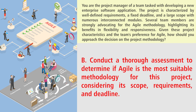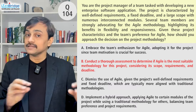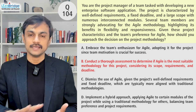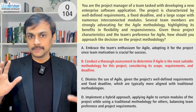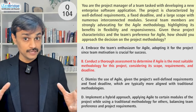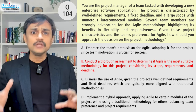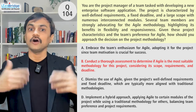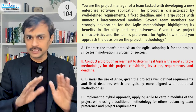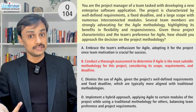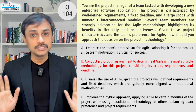Option B: Conduct a thorough assessment to determine if Agile is the most suitable methodology for this project, considering its scope, requirements, and deadline. This is an easy choice — I can definitely pick it because it focuses on analyzing. It's not saying I will or won't use Agile; it says team preference is one factor, let's see other factors as well, and then we'll take a call. It's the safe option. Out of A and B, B looks great.